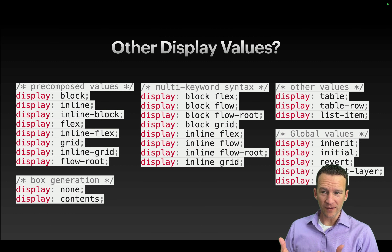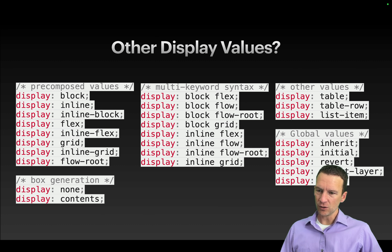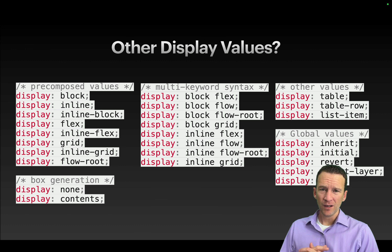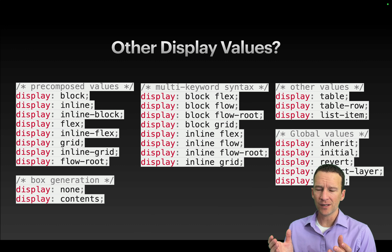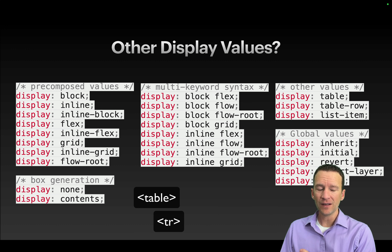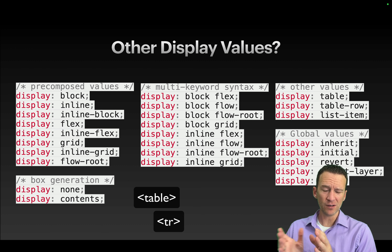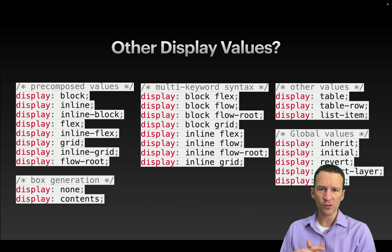There are other display values. You can set things to display table, display table-row, or display list-item. What you're doing is telling CSS to take an element that's not a native tr or table tag and have it behave like a table. Most of the time you'd just use the table tag itself, so these are very uncommonly used.